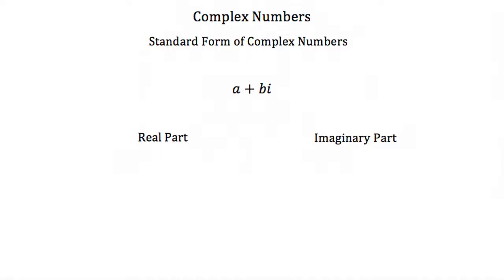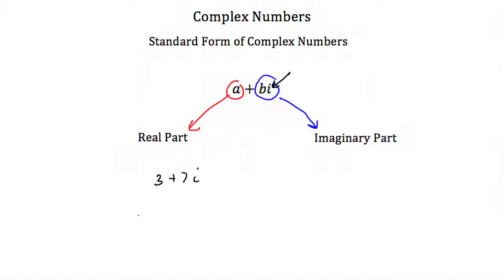Now there's a standard form of how we write complex numbers and that's a plus bi. Now a and b are just integer, rational, or real numbers, but we call the a out front the real part of our complex number, and we call bi the imaginary part of our complex number. It's called the imaginary part because it has our imaginary unit i in it. Examples of complex numbers would be 3 plus 7i, or negative 4 minus 6i, or 2 plus the square root of 2 times i. These are all complex numbers because they contain a real part and an imaginary part.